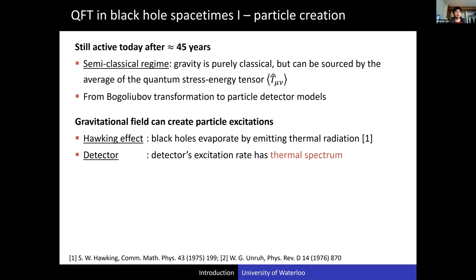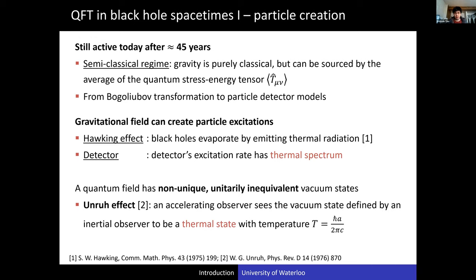In the technical sense, the most important thing QFT in curved spacetime taught us is that a quantum field in general has a non-unique, unitarily inequivalent vacuum state. Unlike textbooks in particle physics where we write the vacuum state as |0⟩ and think it is unique, if you look at the Unruh effect — discovered by Unruh, DeWitt, and Fulling — the vacuum state defined by an inertial observer is actually observed by an accelerating observer as a thermal state. This means that if two observers are not inertially related by a simple Lorentz transformation, in general the vacua are not equivalent.